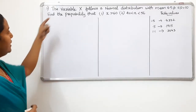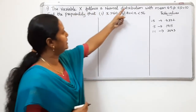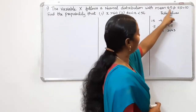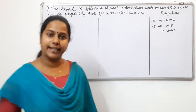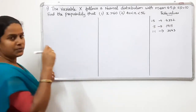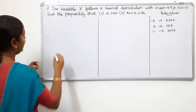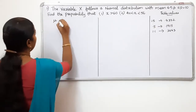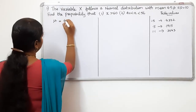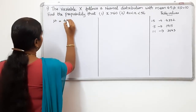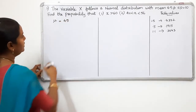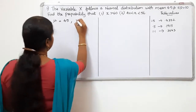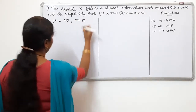So I am going to set up the normal distribution. Mean is 45, standard deviation is 10. Mu will be 45 and sigma will be equal to 10.